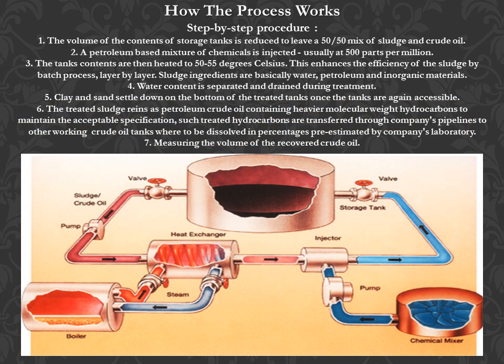Step-by-step procedure: 1. The volume of the contents of the storage tanks is reduced to leave a 50-50 mix of sludge and crude oil. 2. A petroleum-based mixture of chemicals is injected, usually at 500 parts per million. 3. Tank contents are then heated to 50–55°C, enhancing the efficiency of the sludge treatment by the batch process layer by layer. Sludge ingredients are basically water, petroleum, and inorganic materials. 4. Water content is separated and drained during treatment. 5. Clay and sand settle down on the bottom of the treated tanks once the tanks are again accessible. 6. Treated sludge rises as petroleum crude oil containing heavier molecular weight hydrocarbons. To maintain acceptable specifications, such treated hydrocarbons are transferred through company pipelines to other working crude oil tanks, to be dissolved in percentages estimated by the company's laboratory.